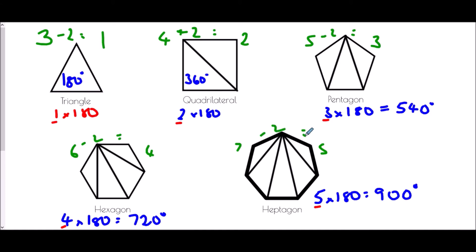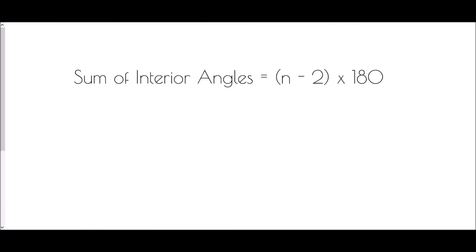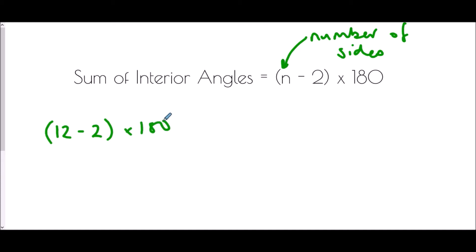So we have a general rule: the sum of the interior angles of any polygon is (n − 2) × 180, where n is the number of sides. For example, a 12-sided shape: 12 − 2 = 10, and 10 × 180 = 1800 degrees.